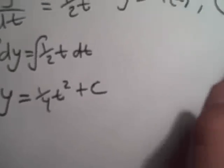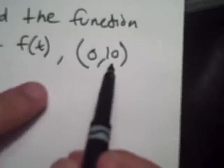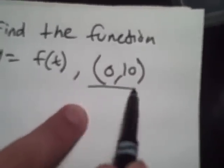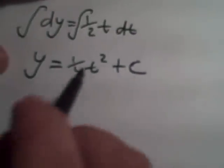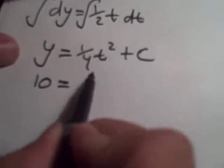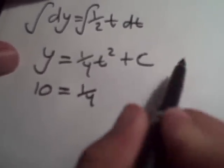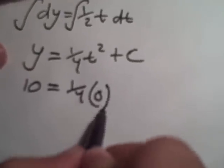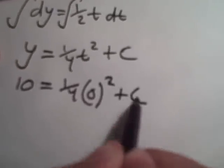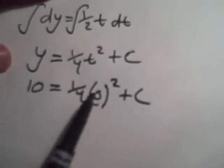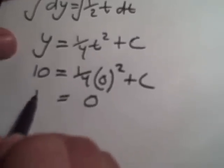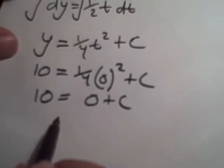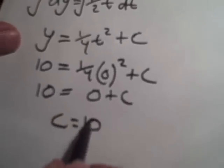Except now, since we know that they want us to find it at this specific point, what we're going to do is simply plug in your 10 for y and your 0 for t. So 0 squared plus C. Now anything times 0 is 0. So we're left with C equals 10.